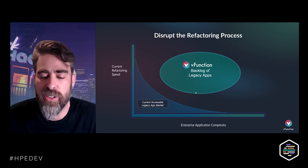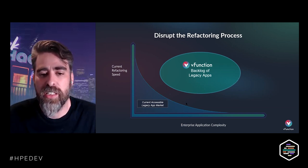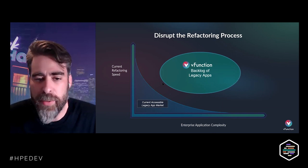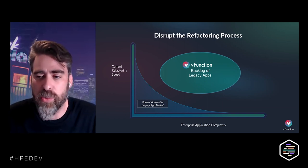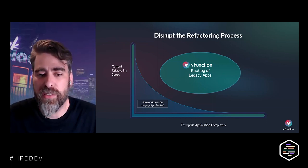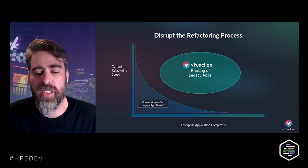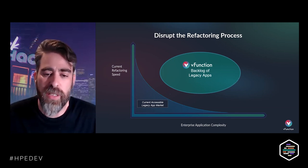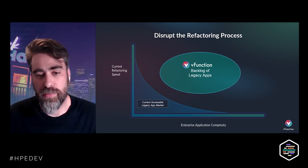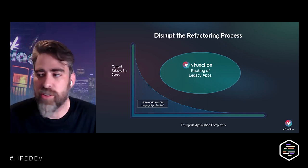What we're trying to do with vFunction is really disrupt the refactoring process. This graph tells you what enterprises can do today — the more complex the application, the lower the refactoring speed, which means that if the application is really complex, organizations rarely have the time and budget to refactor. What we want in vFunction is to allow you to access your backlog of legacy applications and refactor any application in a good, de-risked way, with visibility to make the right choices and decisions.